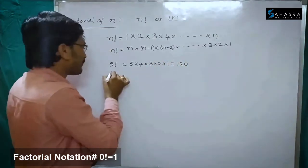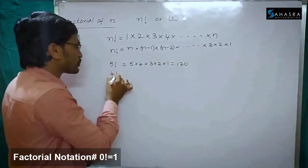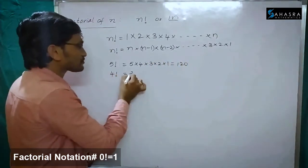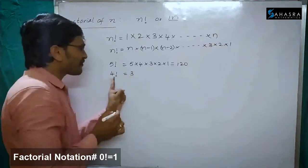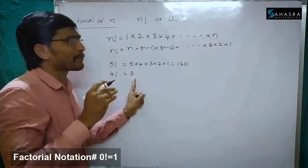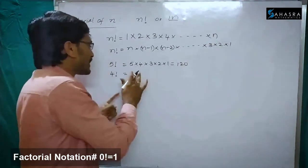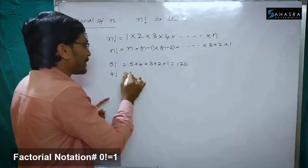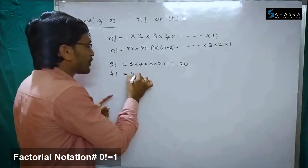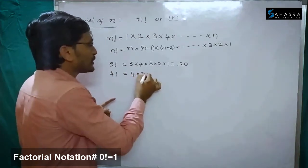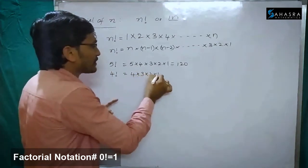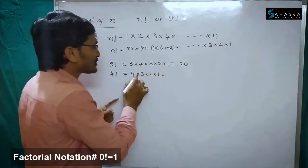If we want to find 4 factorial — 4 factorial is nothing but the product of first 4 natural numbers. I want to write from back: 4 into 3 into 2 into 1.